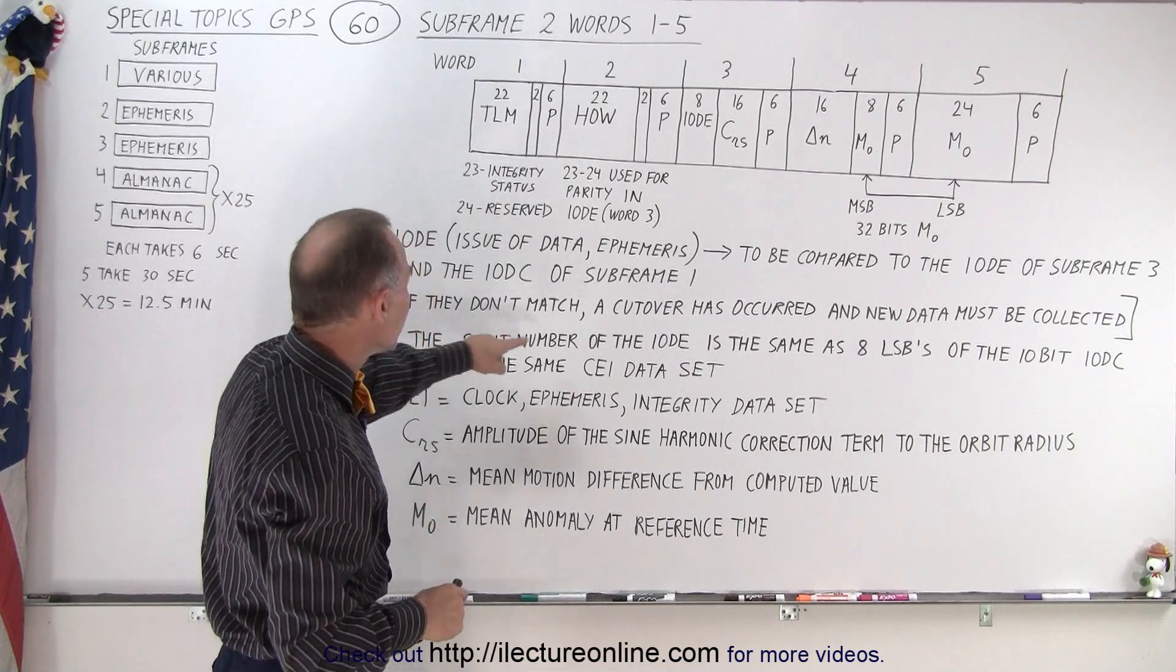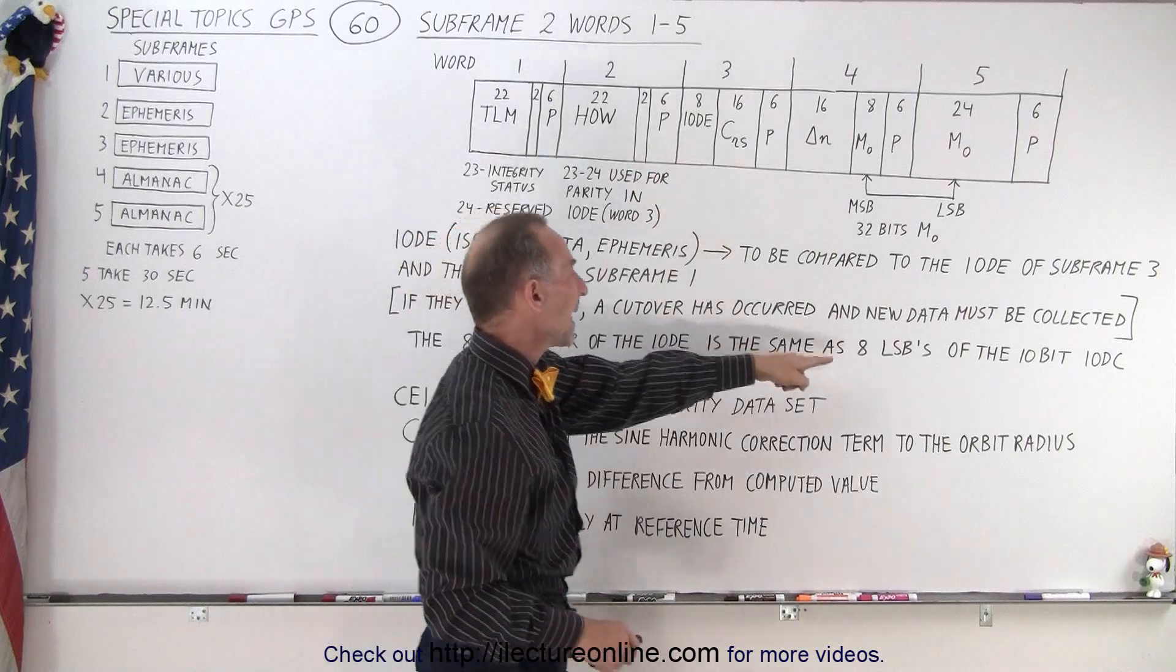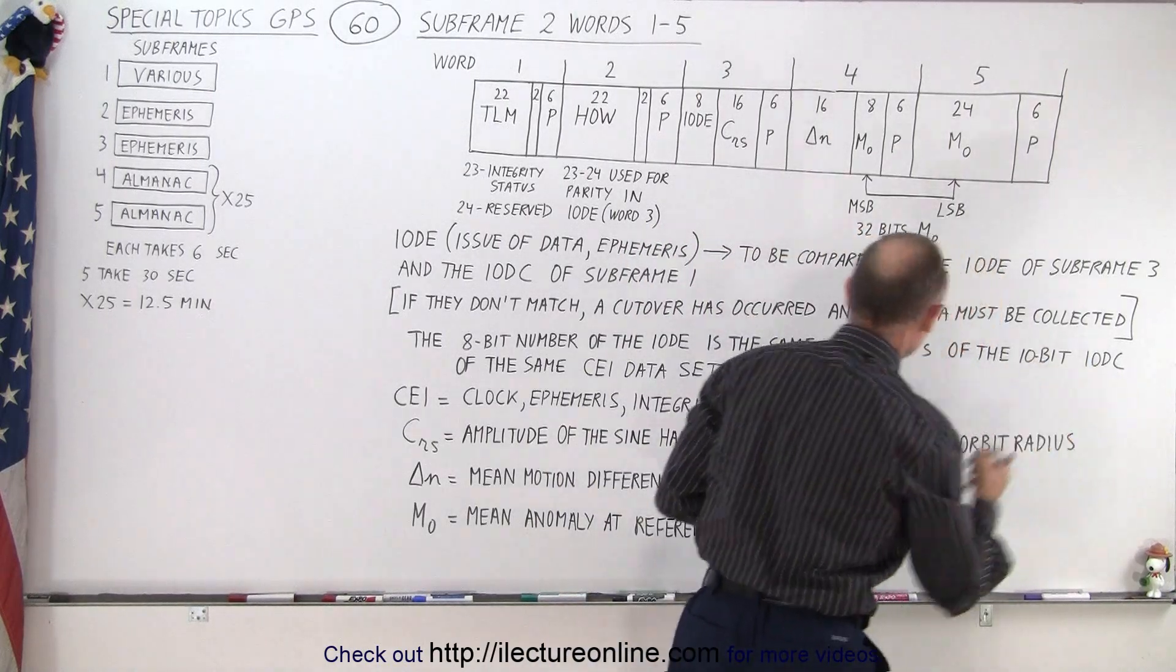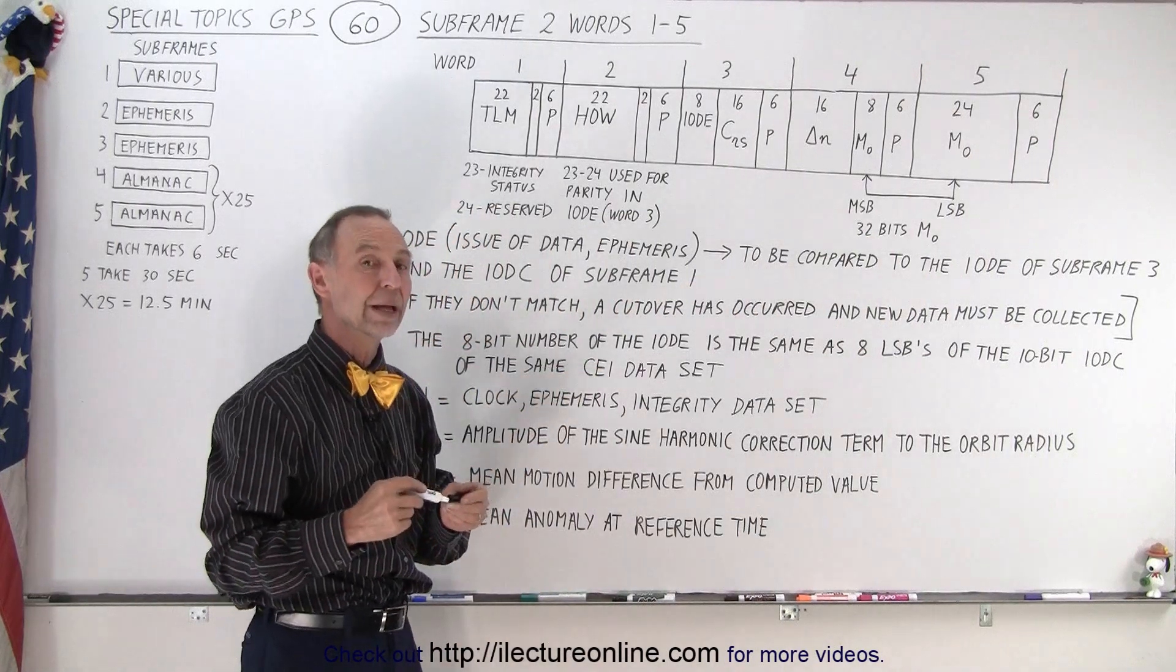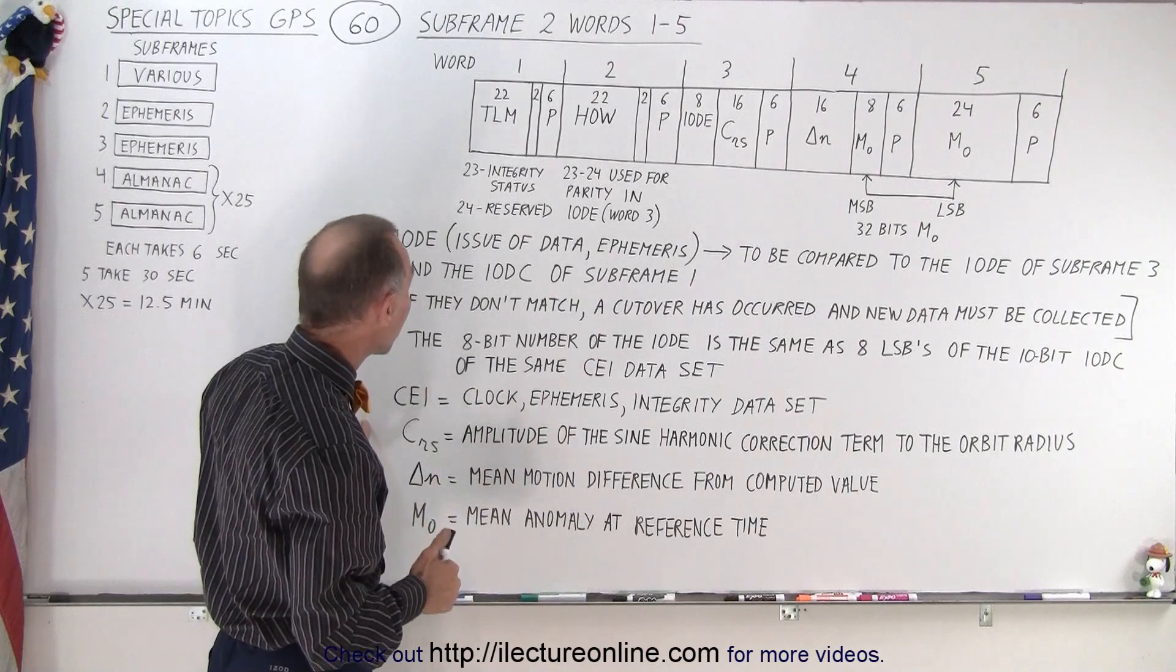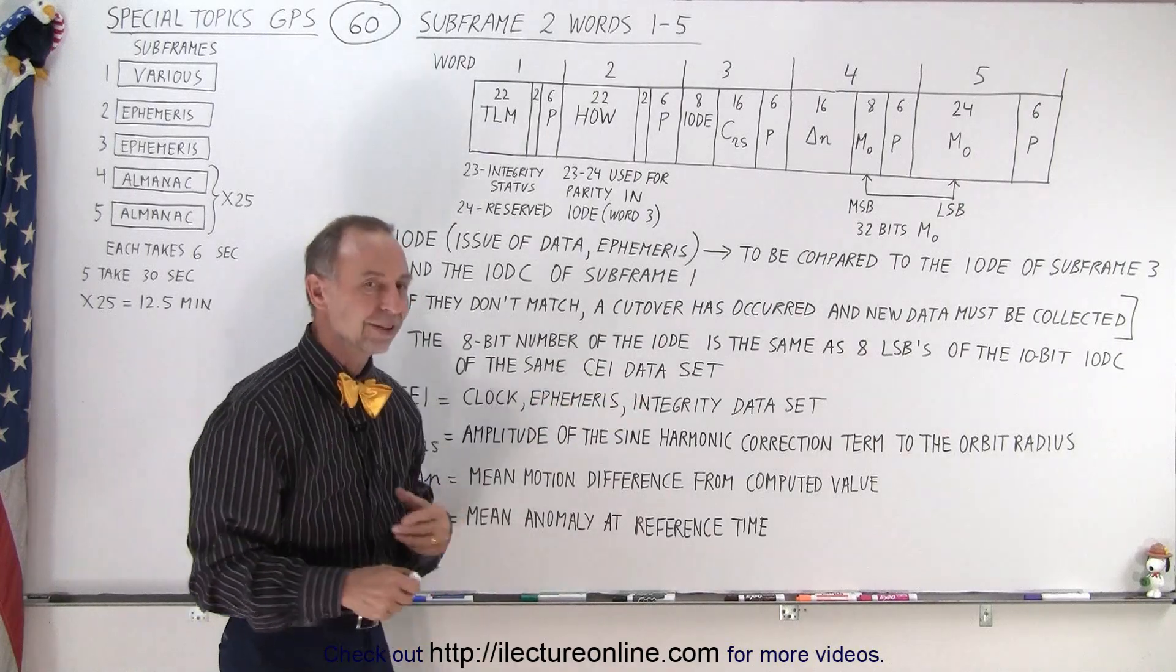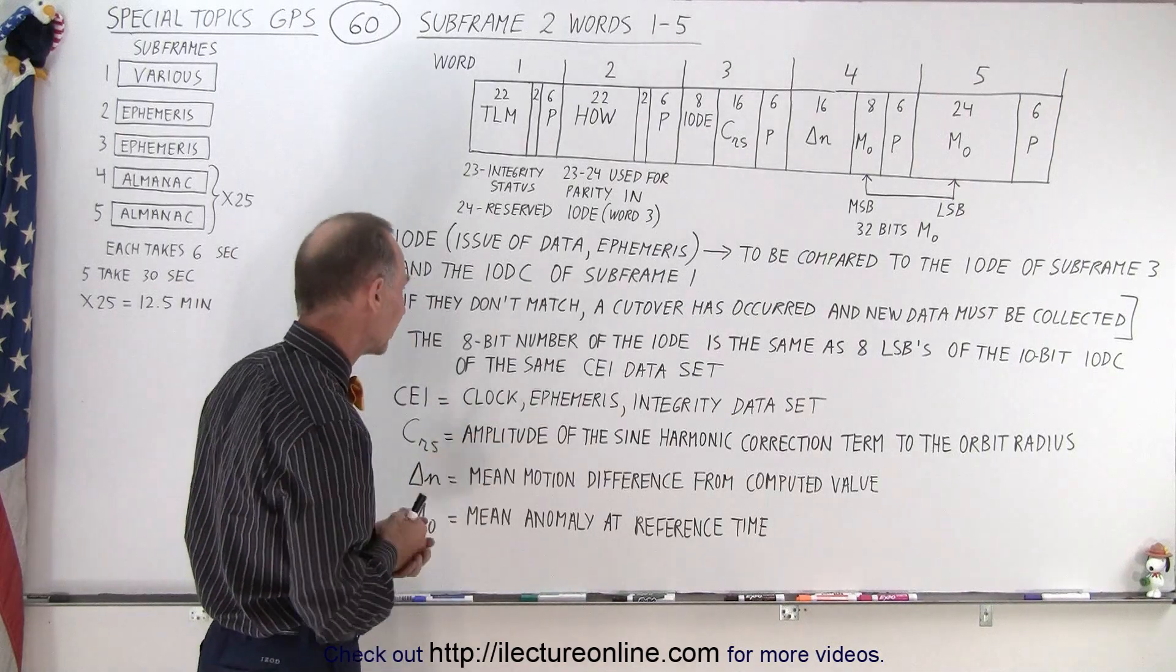So the 8-bit number of the IODE right here is the same as the 8 LSBs of the 10-bit IODC of the same CI data set. So that's how we compare the two. We compare those 8 bits and make sure that they're the same. So what is the CI data set? It's the clock ephemeris integrity data set. So that's how we know that we're dealing with the correct set. So we want to see the integrity of the data.